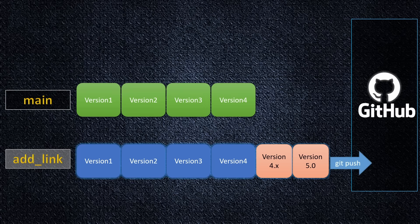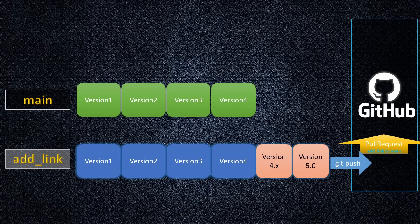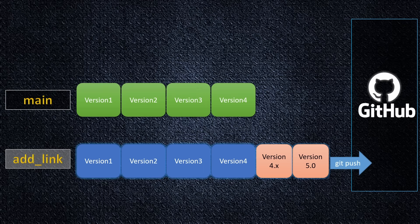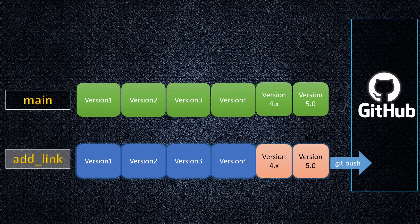After this, I push my changes to GitHub, which creates a branch called AddLink with the same name. On GitHub, I create a pull request to merge AddLink into main. Somebody again needs to review it and confirm everything looks good. Once merged to main on GitHub, the branch can be deleted. Then I checkout main locally and execute git pull to get all the updates, after which I delete my local AddLink branch.